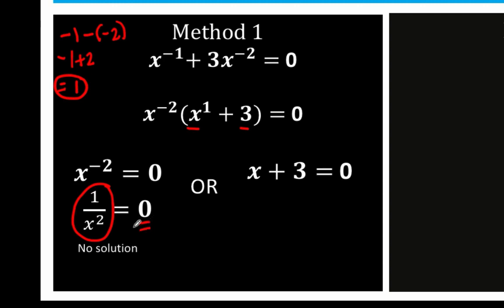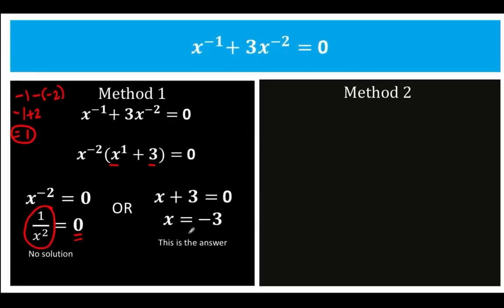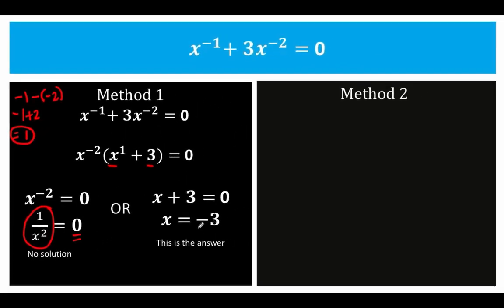It is undefined. For the right side, we solve for x by subtracting 3 from both sides to get x equals negative 3, and this is a valid solution. So for method number 1, our answer is x equals negative 3.